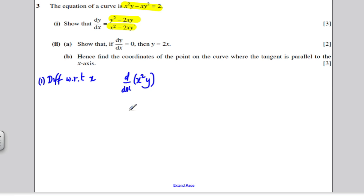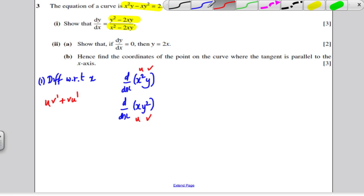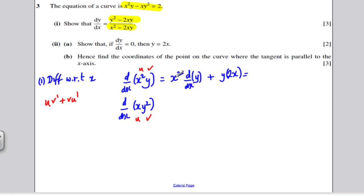So, I'm going to differentiate x squared y and x y squared with respect to x. I'm going to think of this as a product rule where that's u, that's v and here that's u and that's v. I know by the product rule that the differential of uv is uv dash plus v u dash. So I'm going to have u, which is x squared and I'm going to differentiate this y with respect to x, then I'm going to have the v or the y and differentiate x squared which is 2x. If I differentiate y with respect to x, I just get dy by dx. So, this is x squared dy by dx and this is just 2xy.